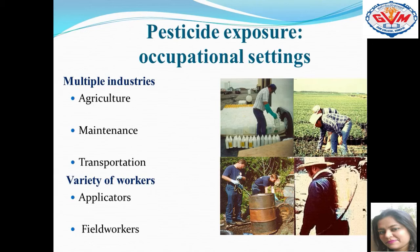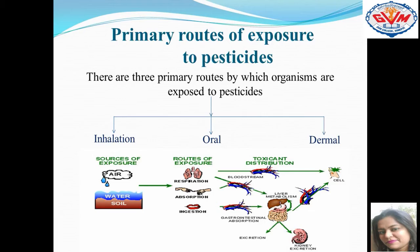The primary routes of exposure to pesticides are three: inhalation, oral, and dermal. In inhalation, fumes present in the environment are taken through the respiratory system. In the oral route, we take pesticides through our diet. In the dermal route, people have direct skin contact with these chemicals — when pores of our body are open, they get directly exposed to the pesticides.